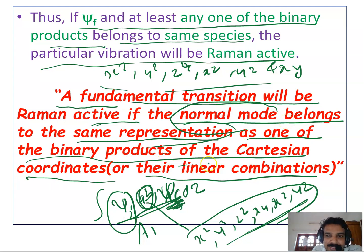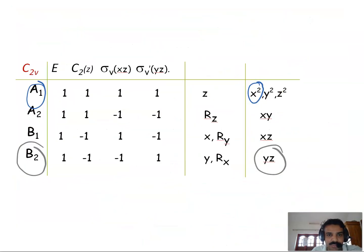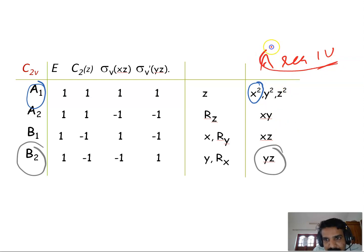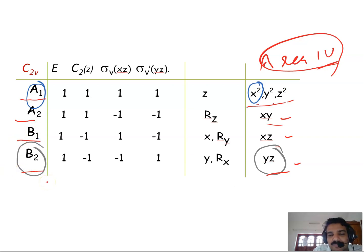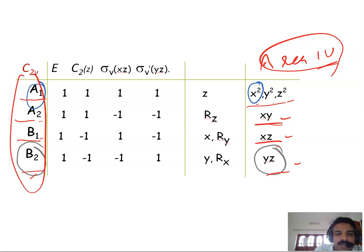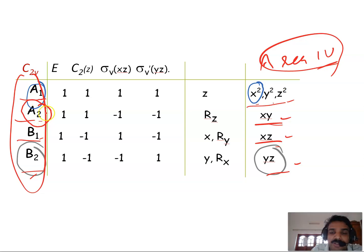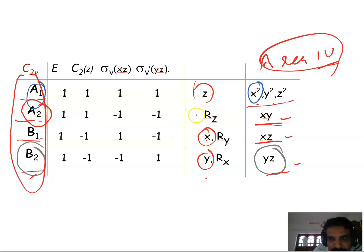Looking at the C2v character table, the binary products x², y², z², xy, xz, yz appear in column 4. In C2v, x² y² z² belongs to A1, xy to A2, xz to B1, and yz to B2 — so all modes in C2v are Raman active. Note that A2 was not IR active (because no Cartesian coordinate transforms as A2), but A2 is Raman active in C2v molecules.